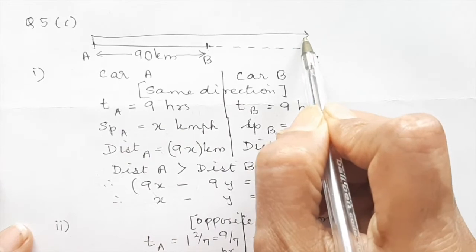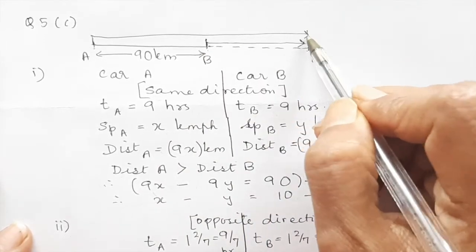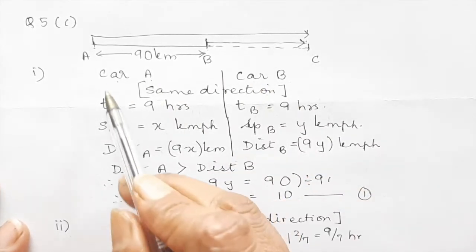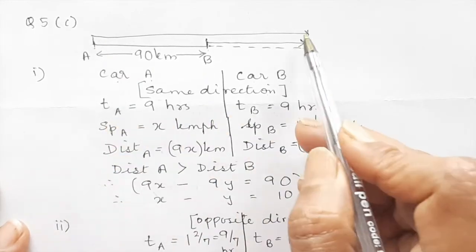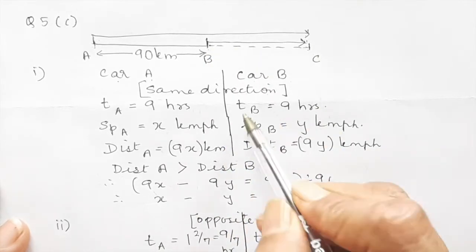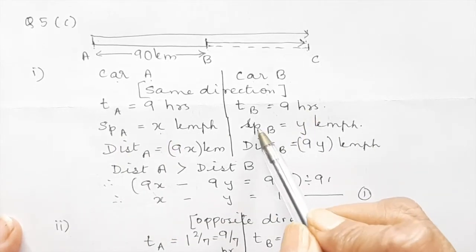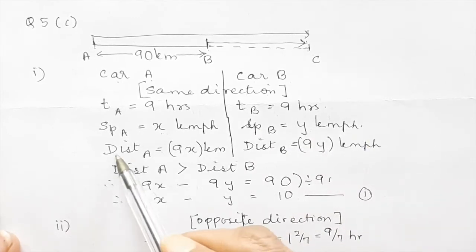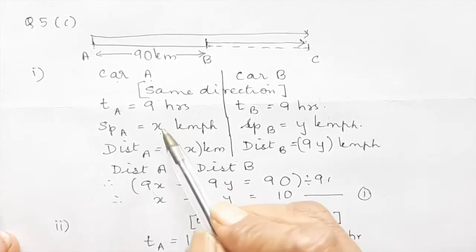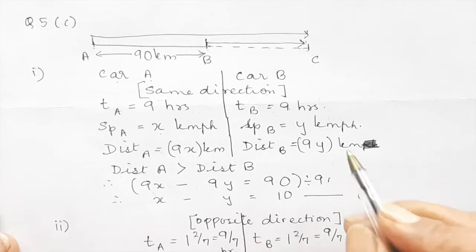Car A starts from A and goes forward, and let us say they meet at C. Car B will also go in the same direction and they are meeting at C. The time for A to go from A to C is nine hours, so B also takes nine hours. Speed of A is x km/h and speed of B is y km/h. Distance equals speed into time, so distance for car A is 9x kilometers.